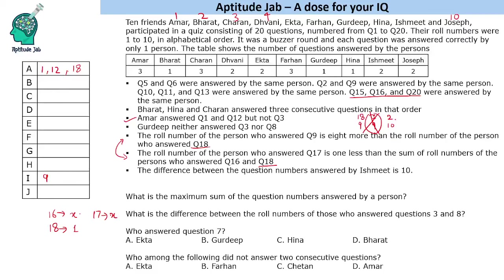So we accept Case 2: question 18 is answered by roll number 2 and question 9 is answered by roll number 10. Now if question 18 is answered by roll number 2, and question 16 is answered by roll number X, then question 17 will be answered by X+1, since the formula gives X+2-1 = X+1.